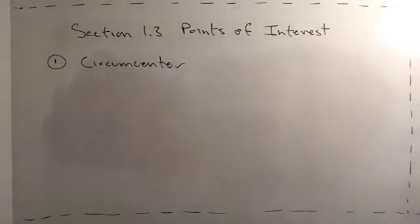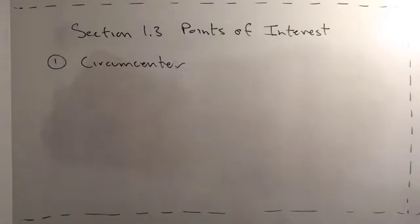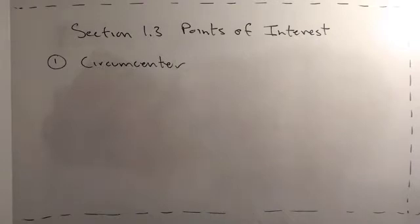This is geometry project number three, section 1.3, Points of Interest in Triangles. This is actually a very short section, but it's got a lot of beautiful, simple theorems in it, and I just want to focus on three of them.